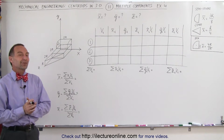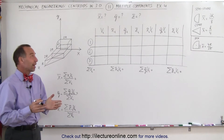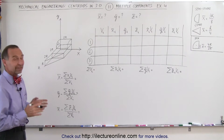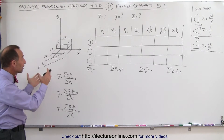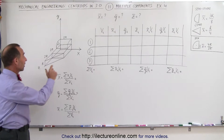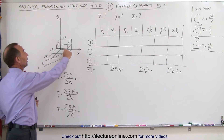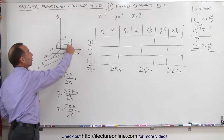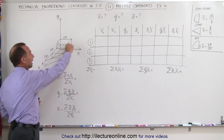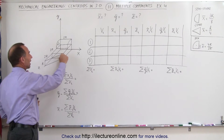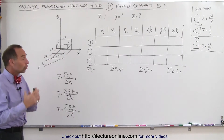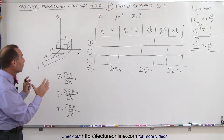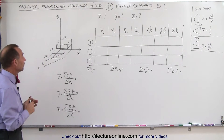Welcome to ElectronLine. Here's our next example of how we find the centroid of an object that's really composed of three separate objects: a quarter of a cylinder, a rectangular slab, and a triangular slab all joined together. We want to find the centroid of that.